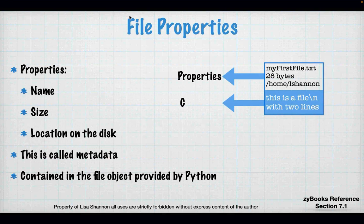Here's my file. I have properties and I have content. The properties: the name is myfirstfile.txt, it's going to be 28 bytes, and it's in /home/shannon. The contents are separate from the properties. The contents is actually what you see in the file — in this case, 'this is a file\n' with a new line, 'with two lines\n'. When I want this file, that's what I'm after. I can't get to it without knowing where it is and what its name is. If dealing with massively large files, you'd want to know the size to handle data in chunks.